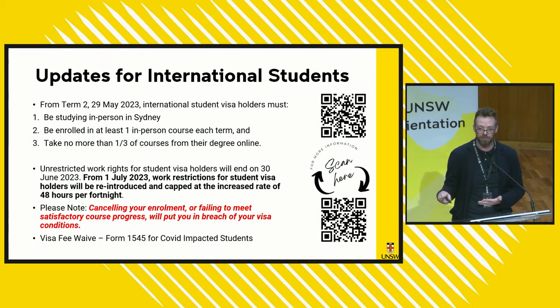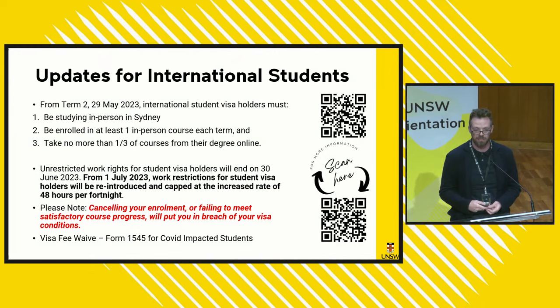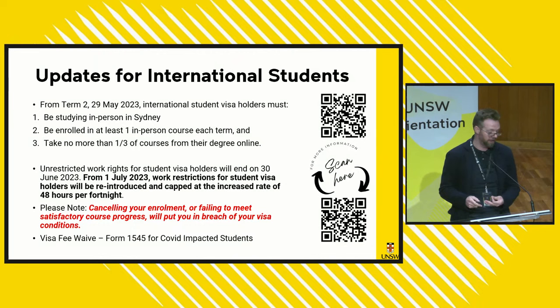Anyone who doesn't meet these three criteria will receive correspondence notifying them that they need to make changes to their enrolment to be compliant with student visa conditions. Otherwise, you're at risk of your COE being cancelled after the census date, which is a breach of your student visa. When thinking about your enrolment, get the right advice from your faculty, look at the online handbook, or go to the teams in the Nucleus — make sure you are enrolled appropriately in the right courses to complete your degree on time.